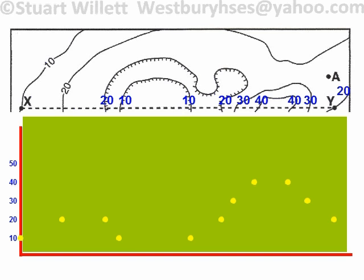I've got all my points now on this grid and I'm going to connect them with a smooth curved line. As I'm going up from 10 to 20, I know we don't get to 30 because otherwise there would be another contour line. So I go up but not quite to 30, then come back down to 20, 10. Here we don't go all the way down to zero or there would be a contour line. Then we come back up to 10, 20, 30, 40 — don't go all the way up to 50 — then back down 40, 30, 20. And that's it. That's the profile.